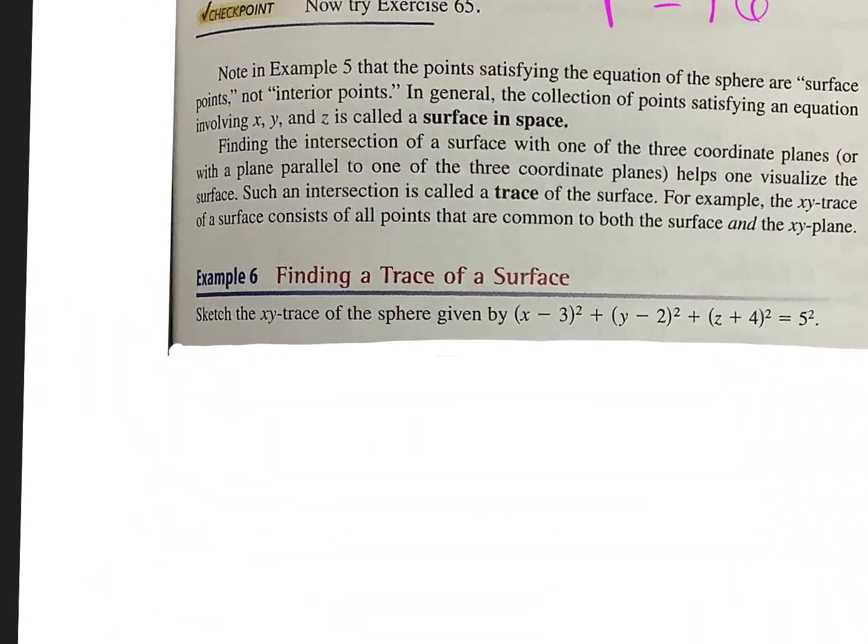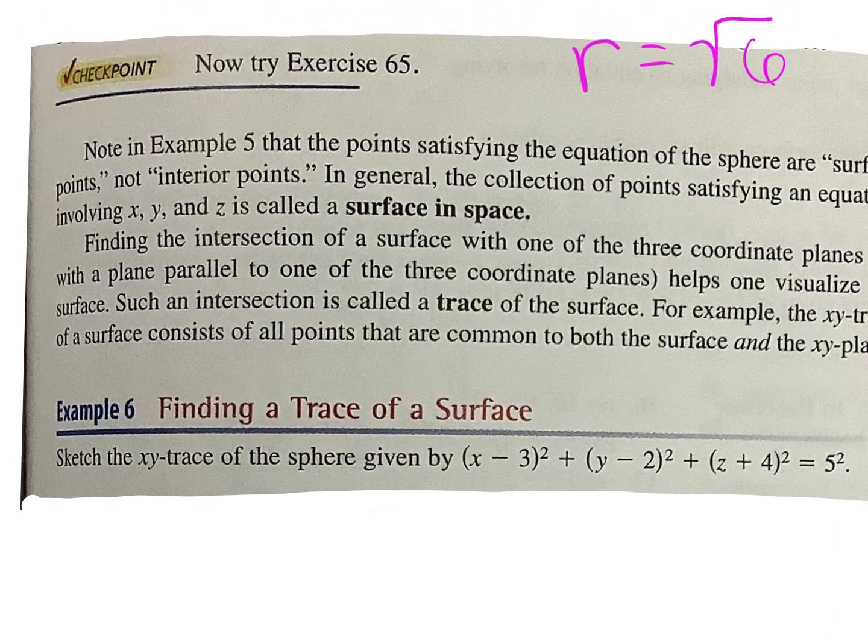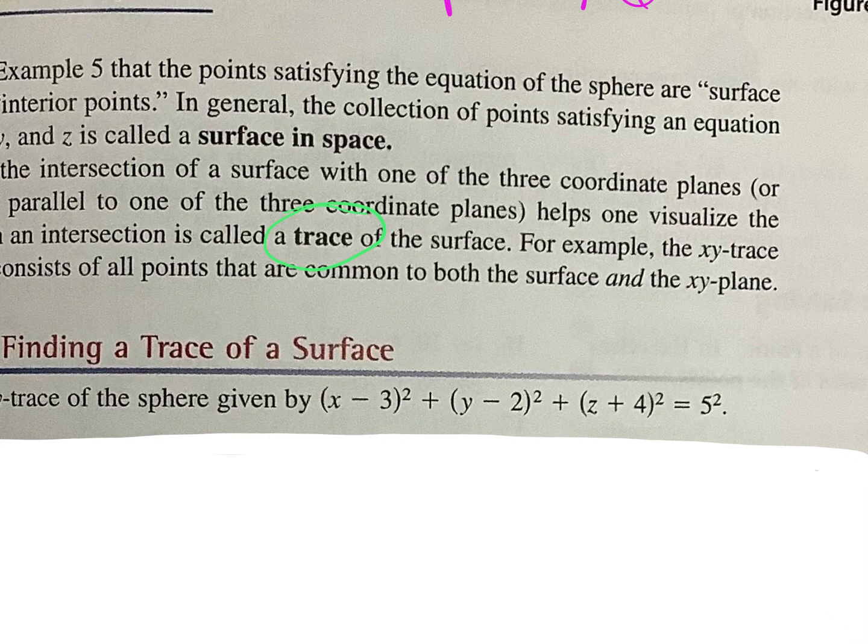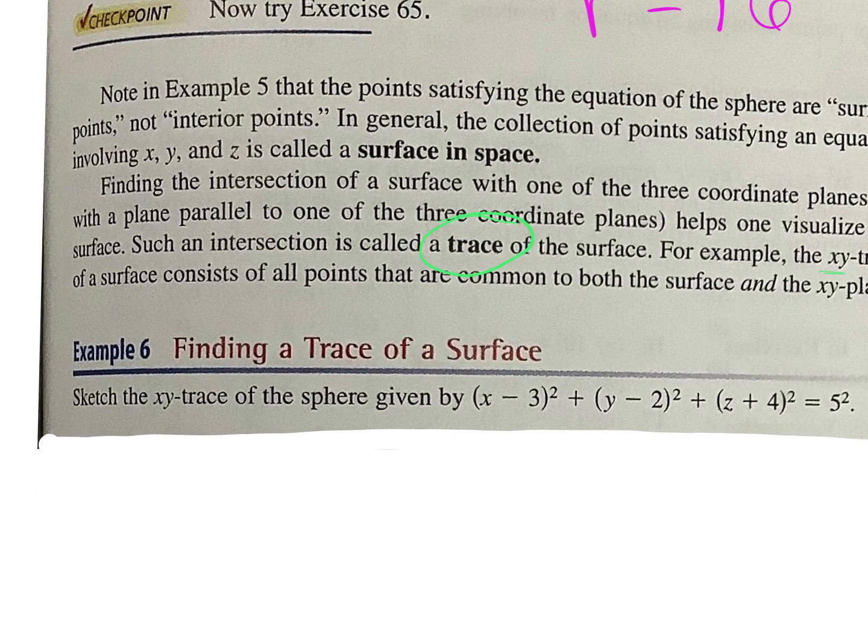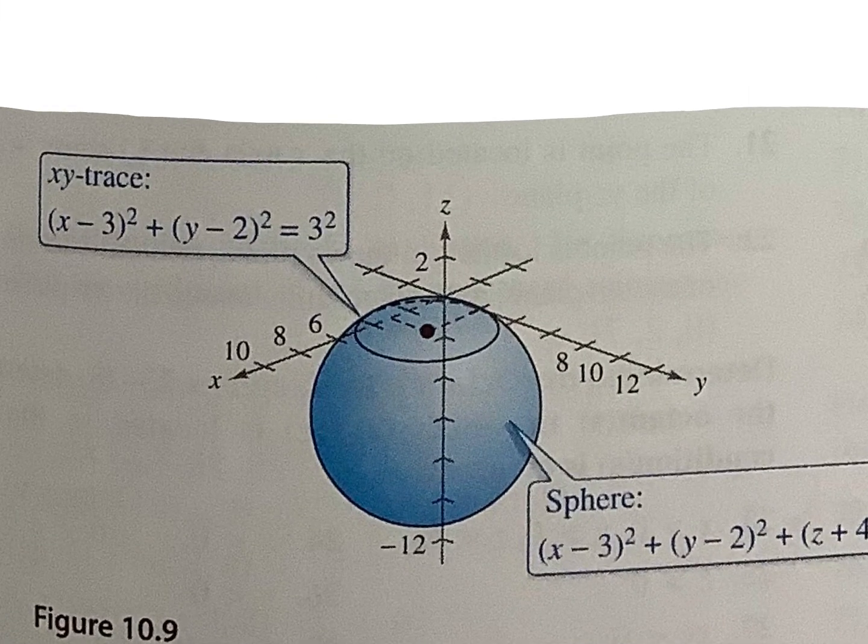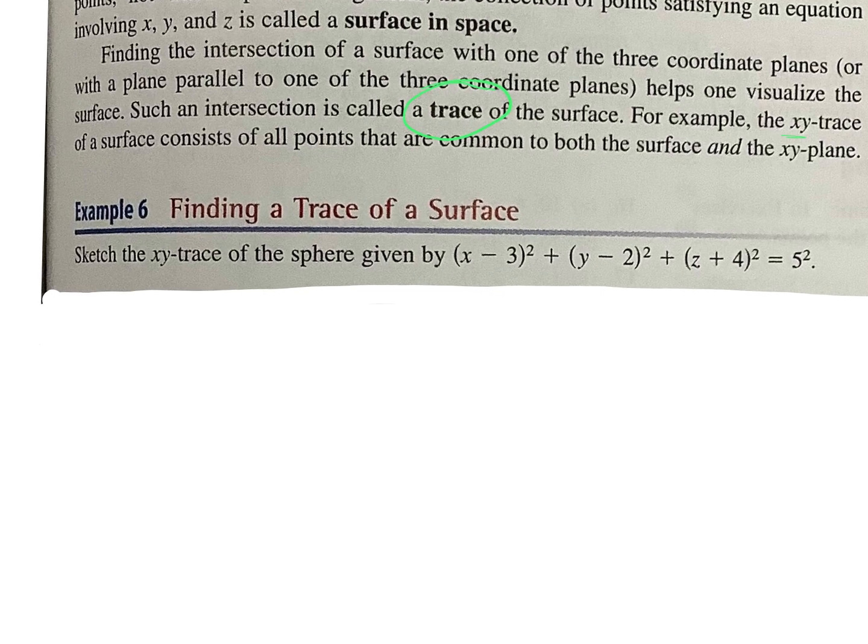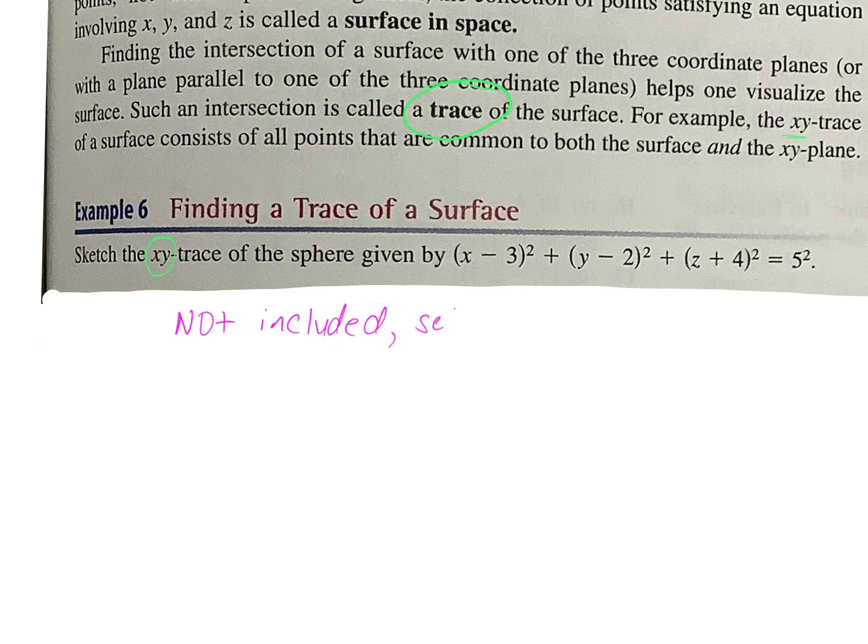Now we're going to do this last example. It says finding the trace of a surface. This explains to you what you're finding in this case. It says if you're finding the surface in space, finding the intersection of a surface within one of the three coordinate planes, X, Y, and Z, helps you visualize the surface. The intersection is called the trace of the surface. When it asks you to find the trace, it will denote what plane it wants, whether it's the XY, whether it's the YZ, whatever. If you're looking at a picture of the trace, it's just kind of like the circle that's at the top or the bottom around the center. How do you find that? First of all, look at what they're asking you for.